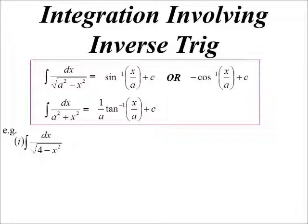So let's have a look at some examples. It's straight in the form a² minus x², so I know a in this case is 2. So we just get inverse sine of x/2.